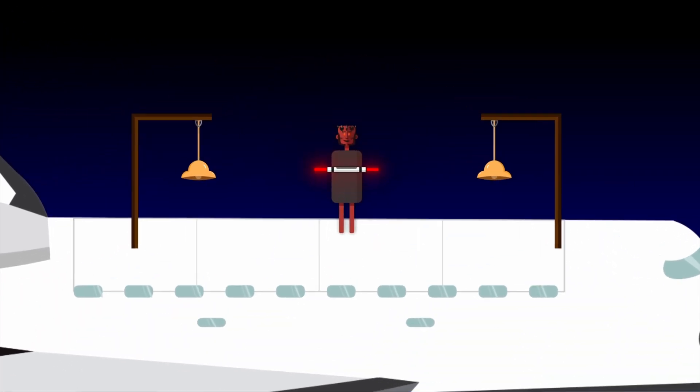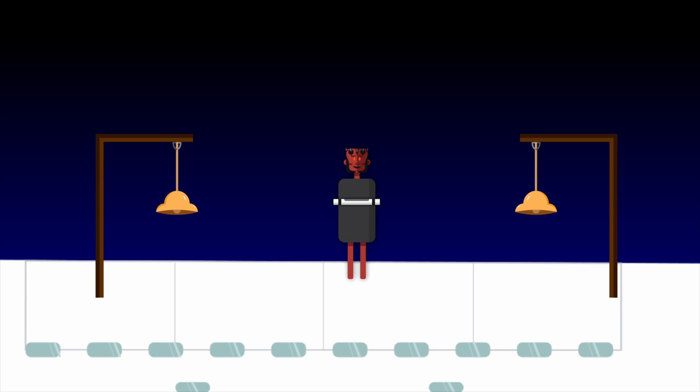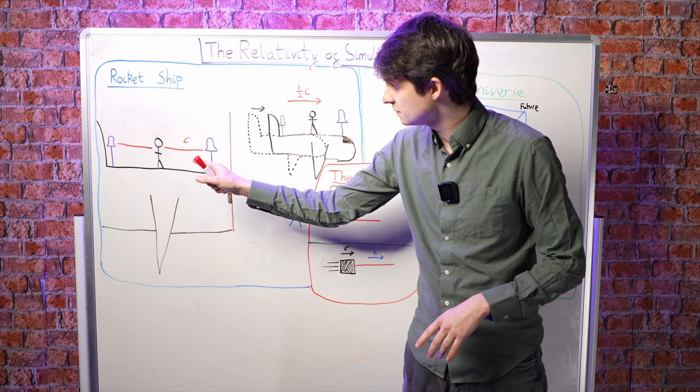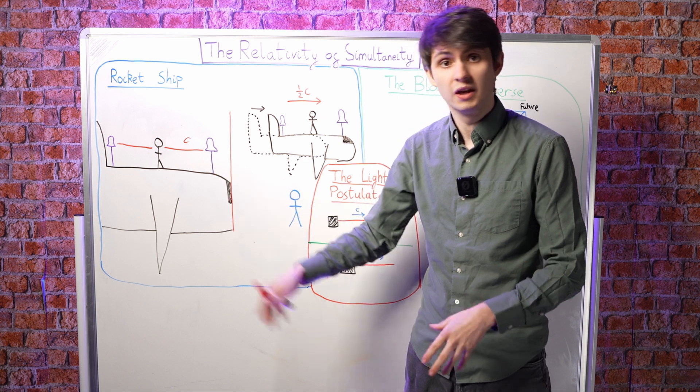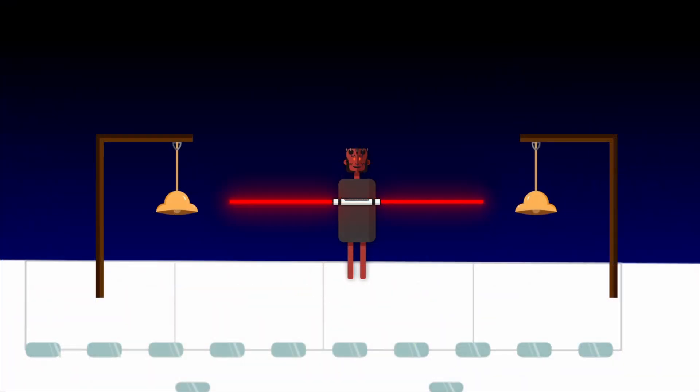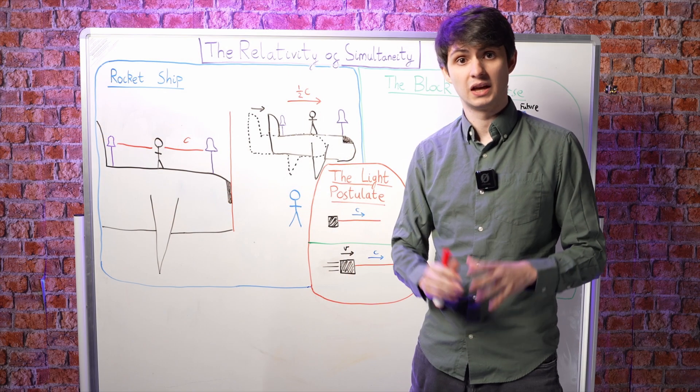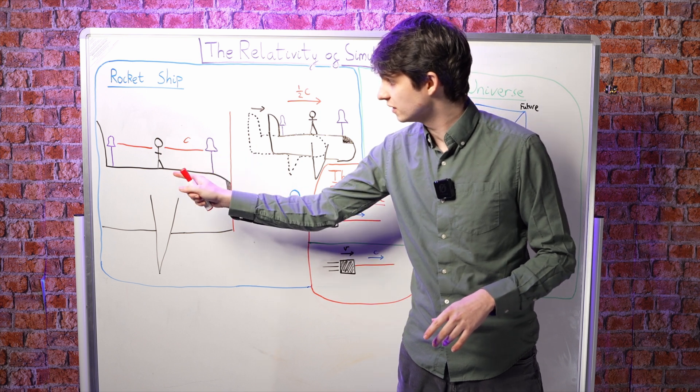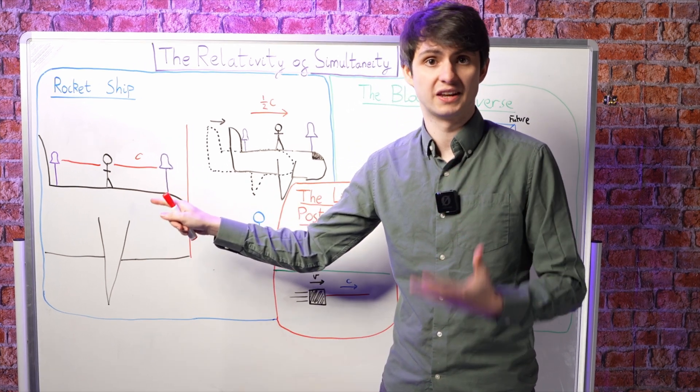We can step onto the rocket and think about what your friend will observe happening. When they switch the laser on, the light postulate dictates that they will see two beams of light travelling towards the two bells at the same speed c. From their perspective, since the two beams have the same distance to travel and are travelling at the same speed, they will observe the two beams to hit the bells at exactly the same time. They will hear a single chime. In other words, the ringing of the bells to the person on the rocket will be simultaneous.